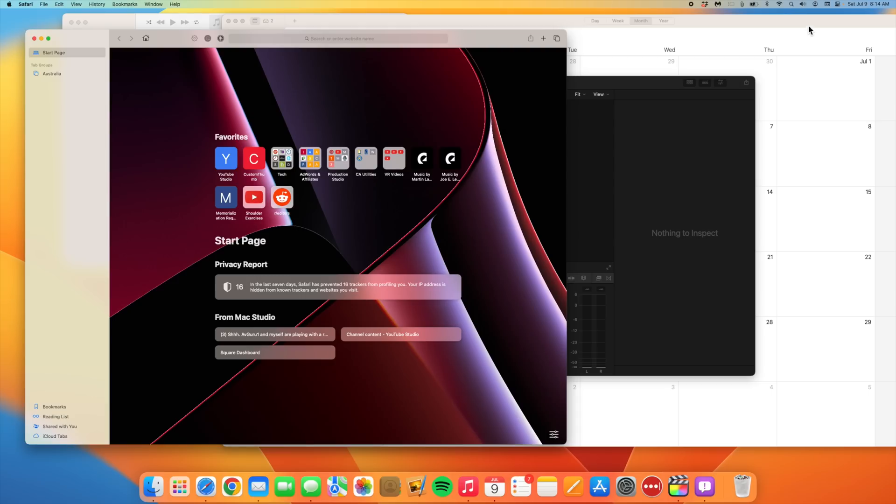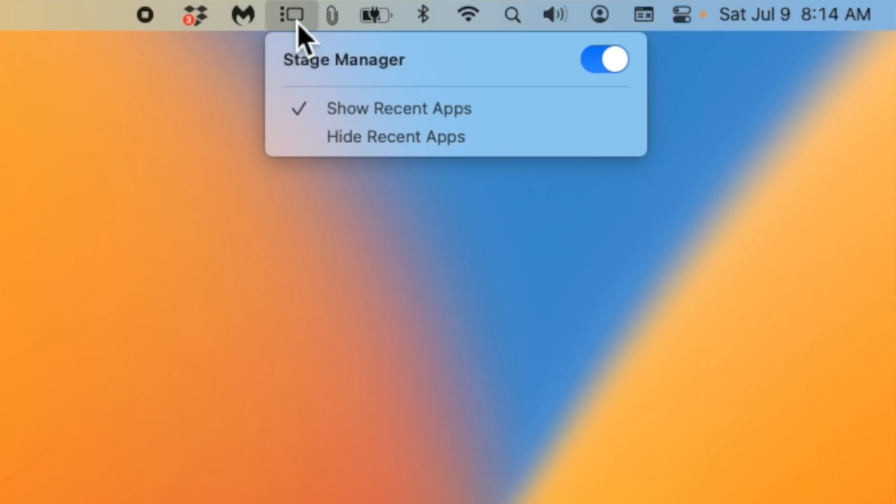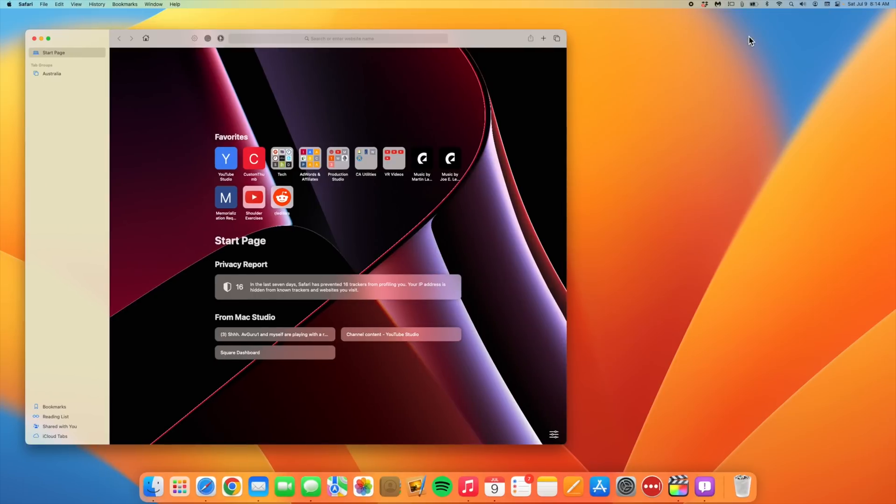So let's say I've got my calendar open with Safari, Music, and Final Cut. Stage Manager will move all but one of them off to the side. If I go into the toolbar, I can find options to have Stage Manager visible at all times, or I can have it only appear when I move my cursor off to the side.